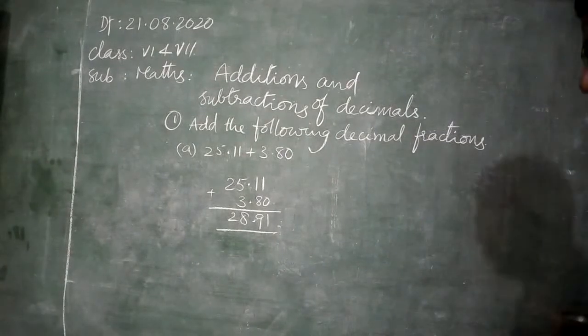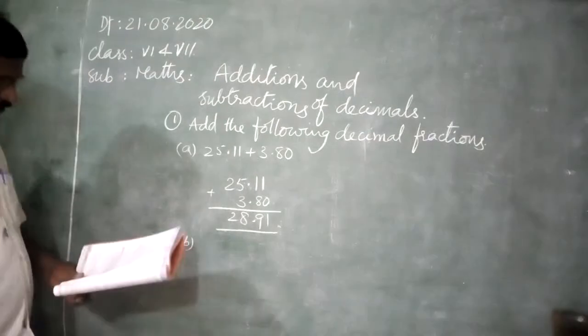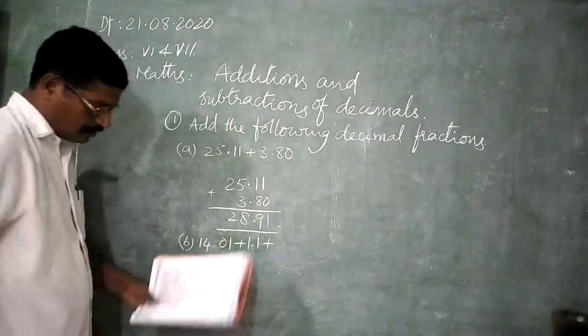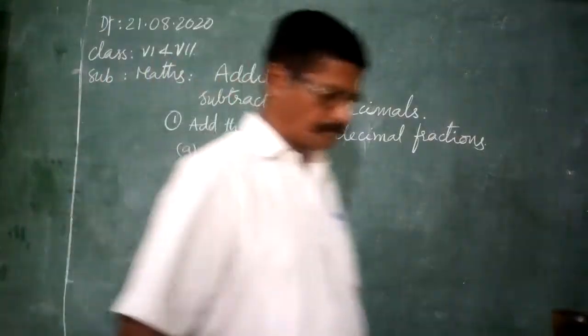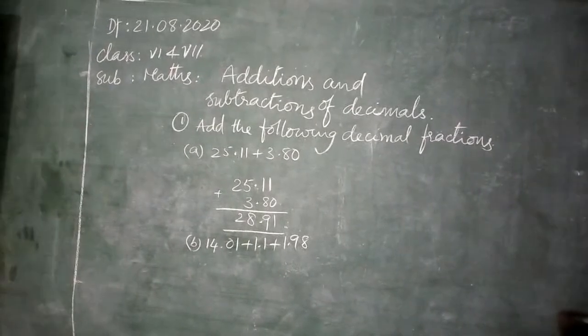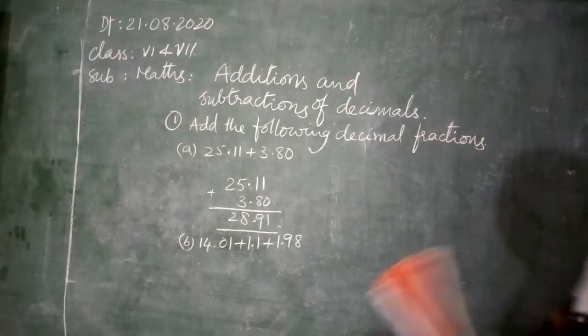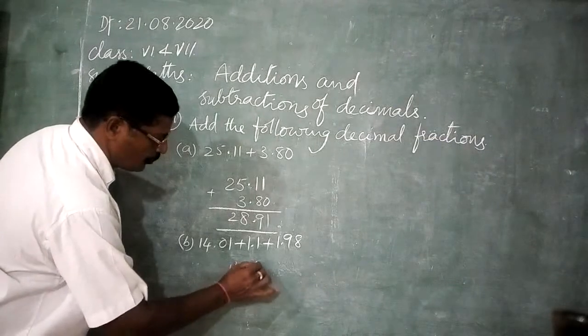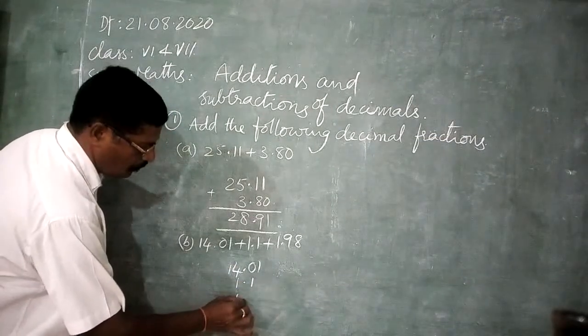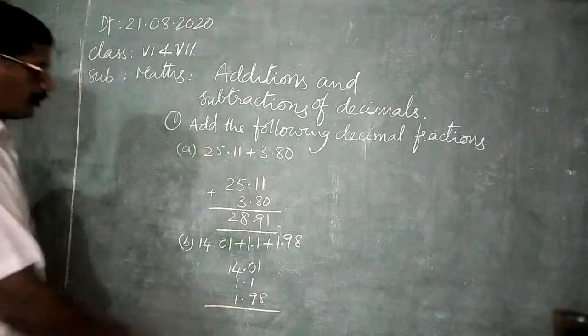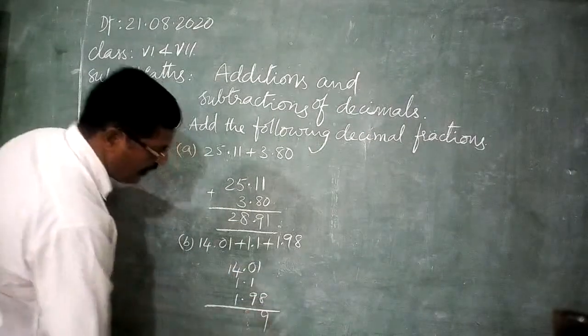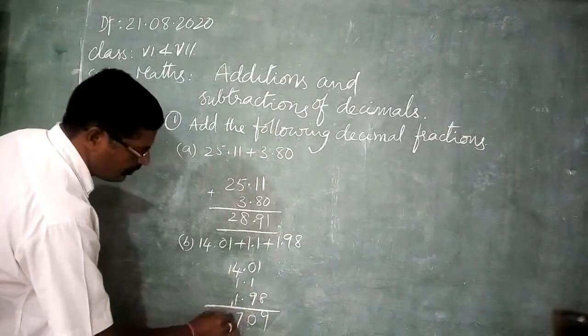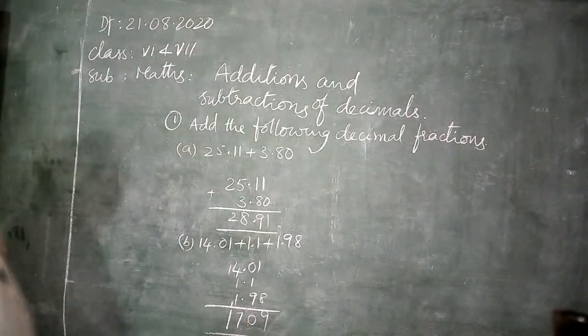Second question. 14.01 plus 1.1 plus 1.98. 14.01, 1.1, 1.98. Add. 8 plus 1, 9. 9 plus 1, 10. Here, 1. 1 plus 1, 2 plus 1, 3 plus 4, 7. Here, 1. This is the answer. Next question.